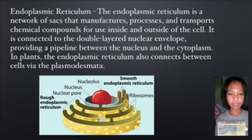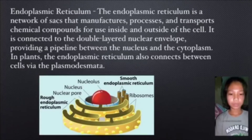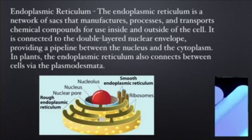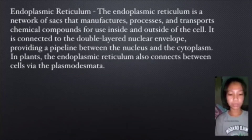Endoplasmic reticulum. The endoplasmic reticulum is a network of sacs that manufactures, processes, and transports chemical compounds for use inside and outside of the cell. It is connected to the double-layered nuclear envelope, providing a pipeline between the nucleus and the cytoplasm. In plants, the endoplasmic reticulum also connects between cells.